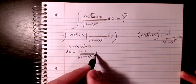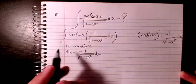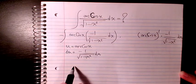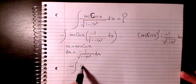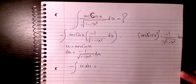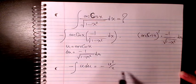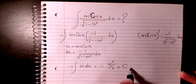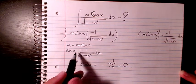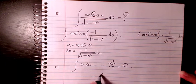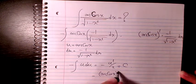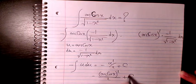So it will be negative u du. Then when you integrate it, it's going to be u squared divided by 2 plus C. And u is arccos x, so it's going to be arccos x squared divided by 2 plus C.